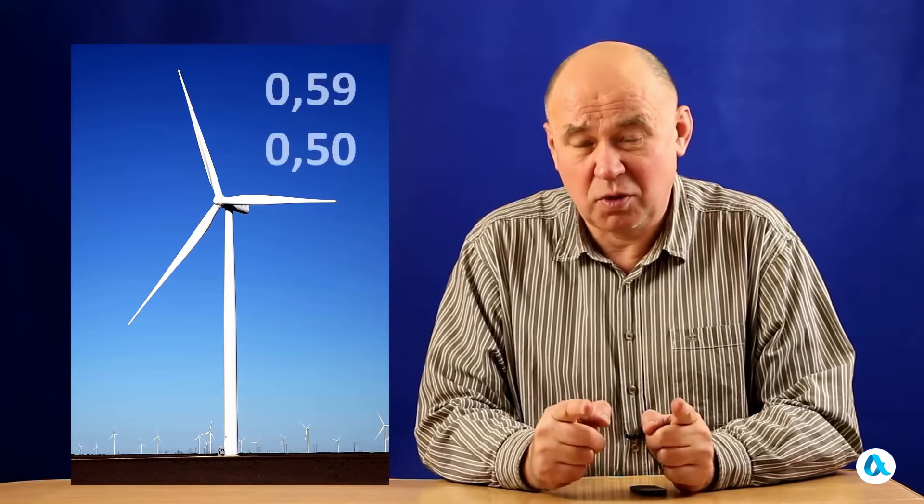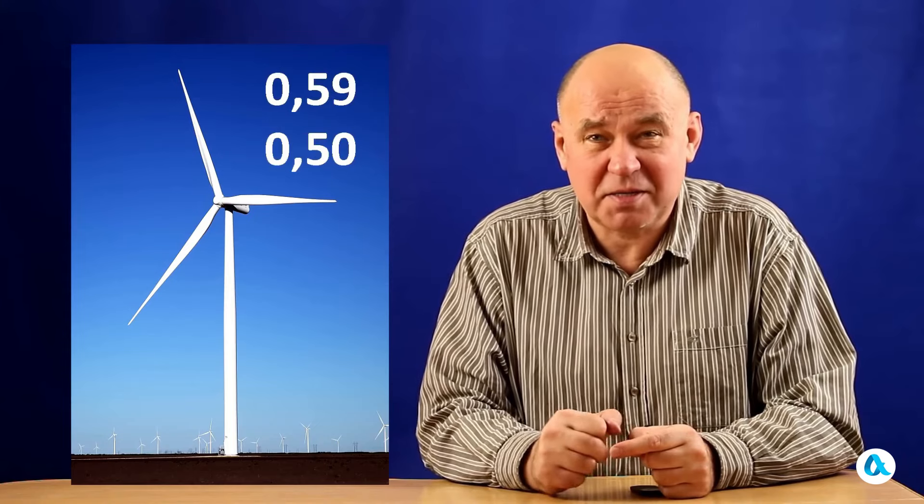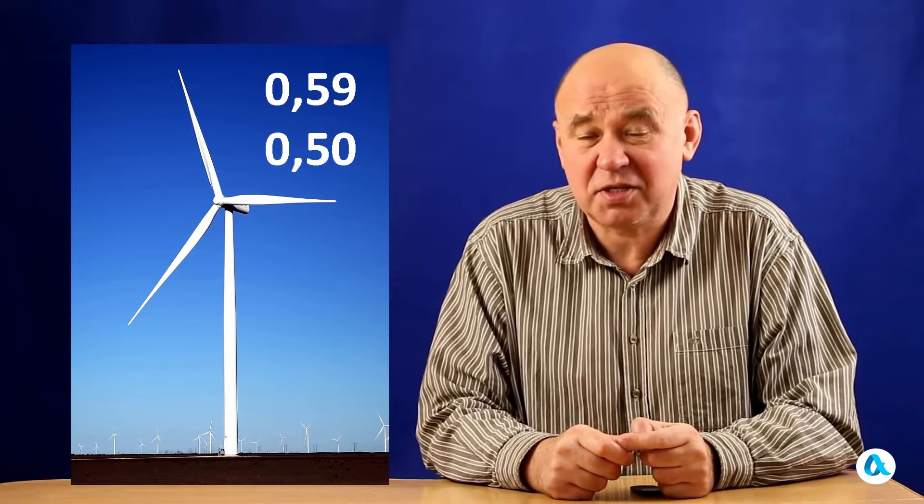And what have the theorists, experimenters, and engineers achieved in their collaborative work? Modern wind turbines have an energy extraction coefficient from the air flow of 0.5. This is 85% of the maximum possible coefficient of 0.59. A very solid achievement.